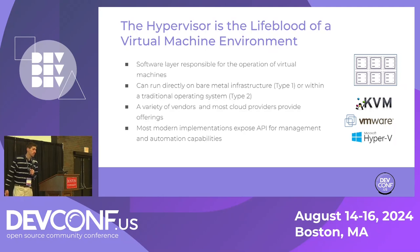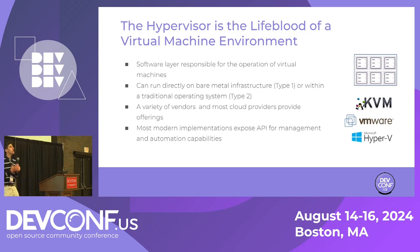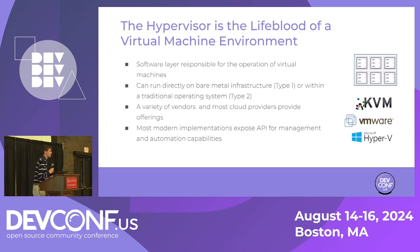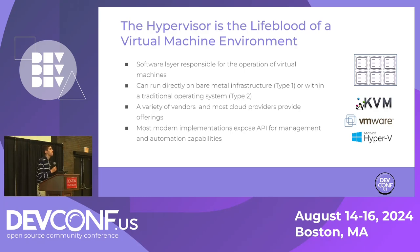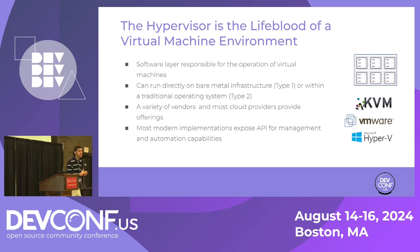The cloud abstracts the hypervisor with an API layer — you're not talking directly to it, you're talking through a proxy. Most modern hypervisors do provide an API, and that provides a lot of opportunities for automation. Because if you're just clicking buttons to spin up a VM, after a while you want to automate it — put some bash scripts together, or use an automation tool like Ansible.